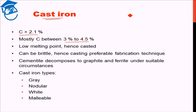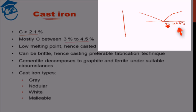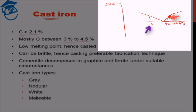Now how do we understand the low melting point? If you remember the iron-carbon phase diagram, in the cast iron region, the eutectic region — at 1147 degrees Celsius this was 4.3 percent, and this is the eutectic region. So though iron's melting point is 1538 degrees Celsius, the eutectic temperature is only 1147 degrees Celsius, which is quite low. And if we go in the range 3 to 4.5 percent, it remains somewhere between 1200 to 1300 degrees Celsius.